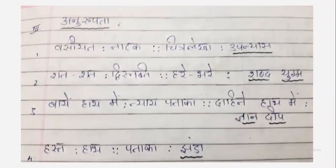Anurupta — this is a type of objective where, seeing the first pair, you have to solve the second pair. Number one: vasiyat — natak; chitra lekha — upanyas. Natak means drama or play, upanyas means novel. So if vasiyat is a drama, then chitra lekha is a novel.